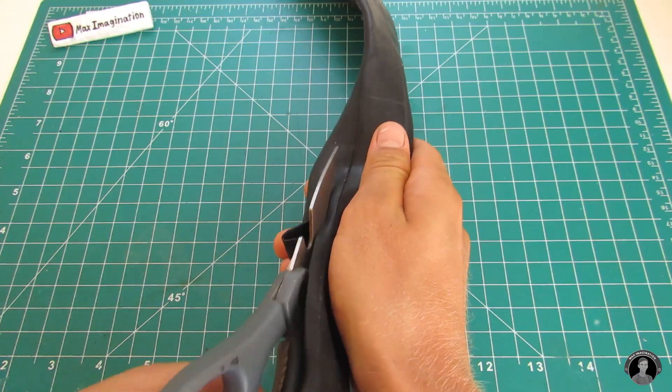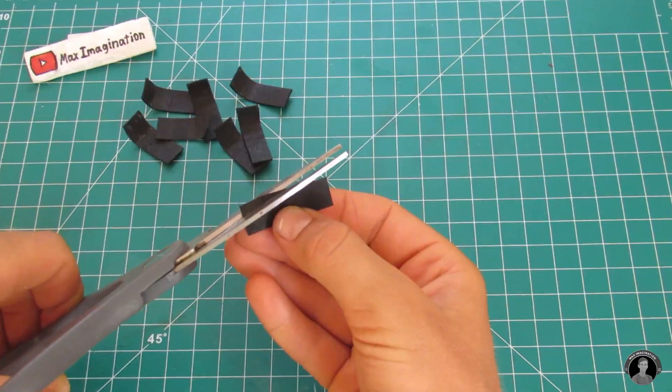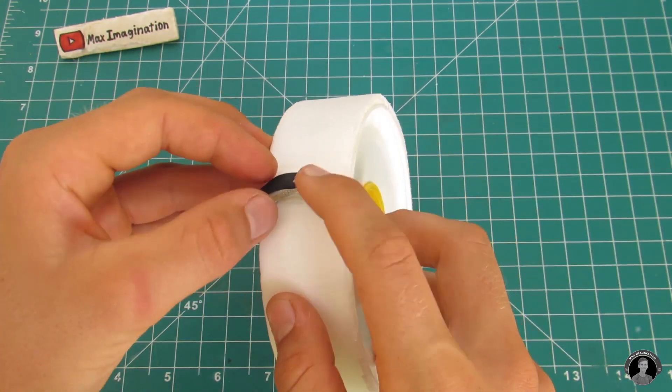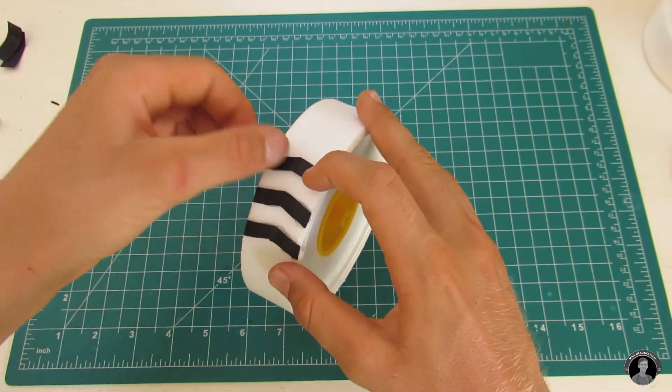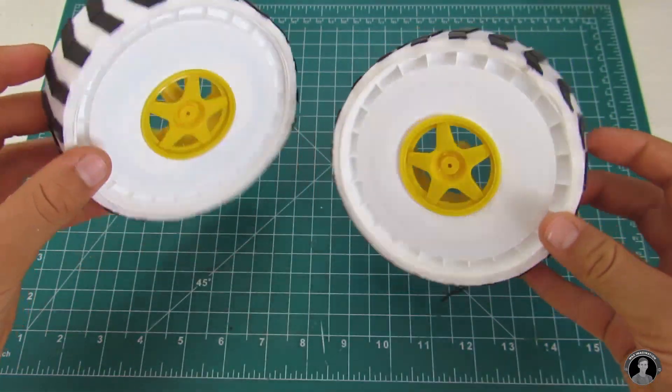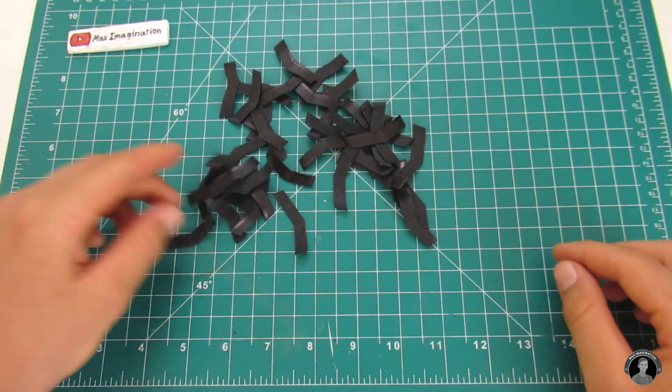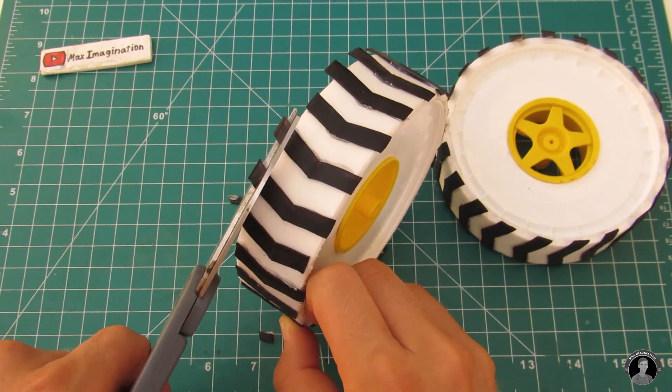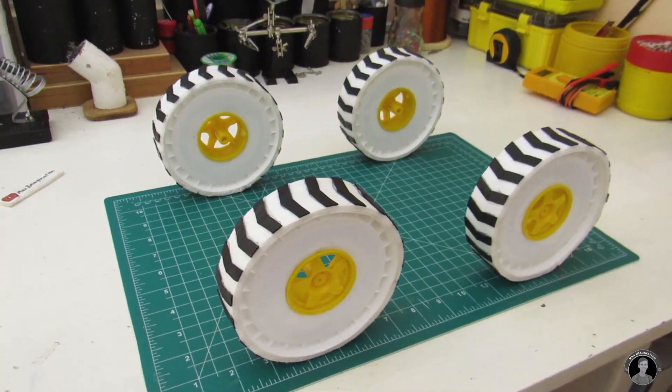From some bicycle tube rubber, we're going to cut a handful of tire tread pieces and glue them onto the wheels. Once you're done gluing them all on, the tires should look like this. And I really admire the zebra look to them. It's so cool.